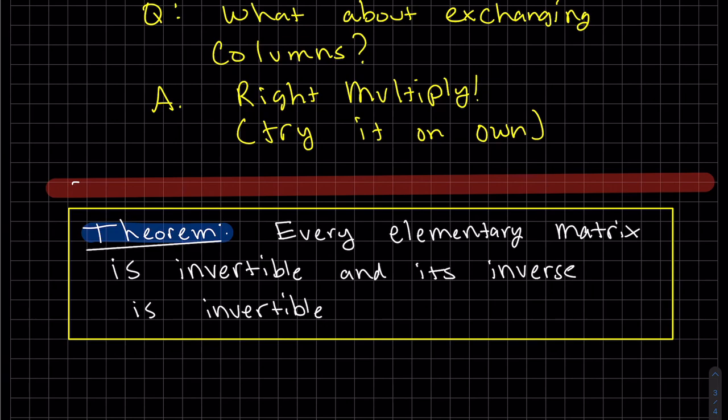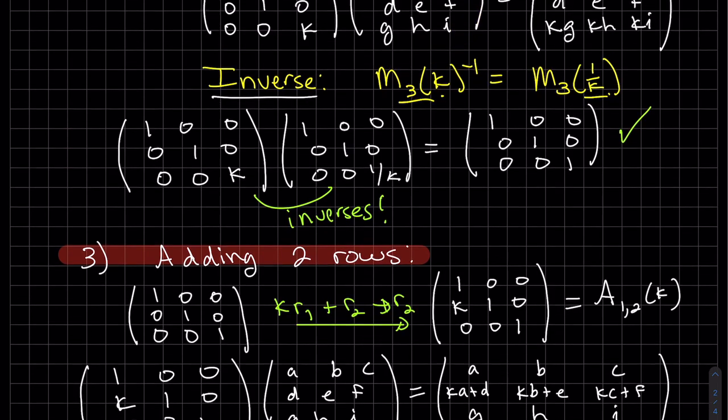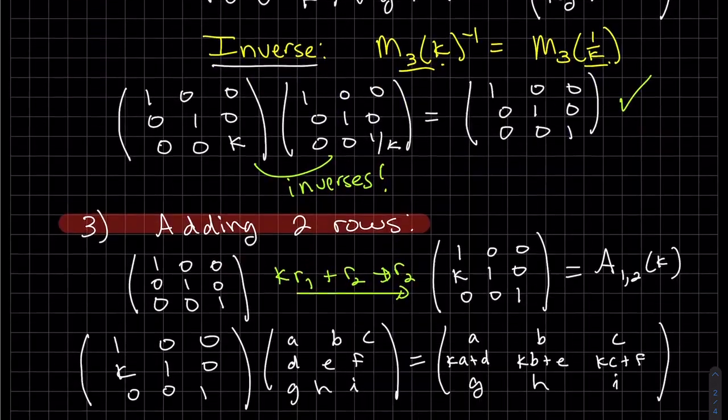So we have the theorem. Every elementary matrix is invertible. And its inverse is invertible. Well, I don't really need to prove it. Because I just showed you every single elementary matrix. And we found the inverse to every single type. So that's true.